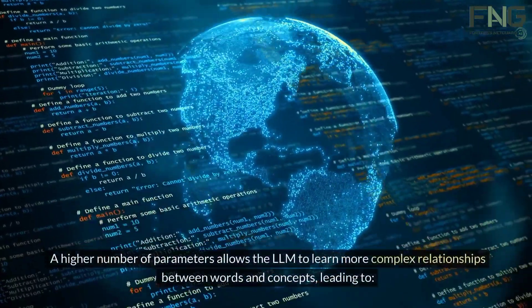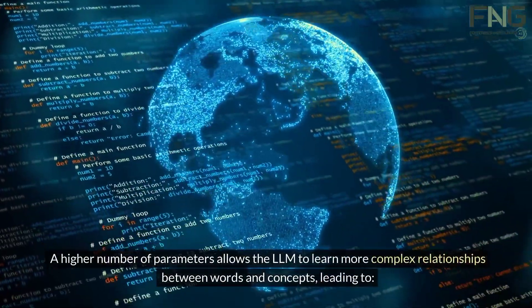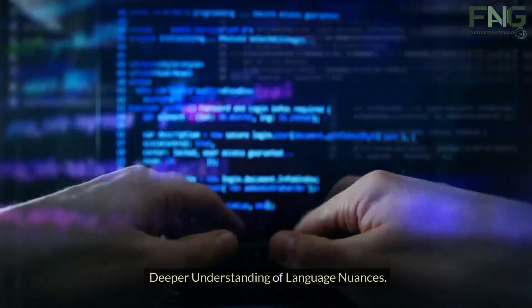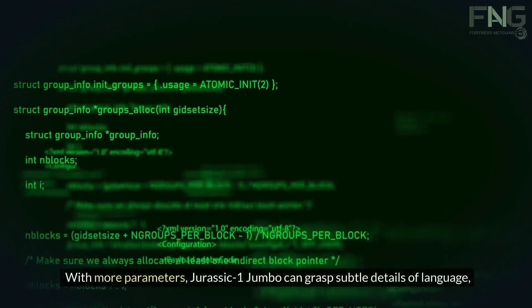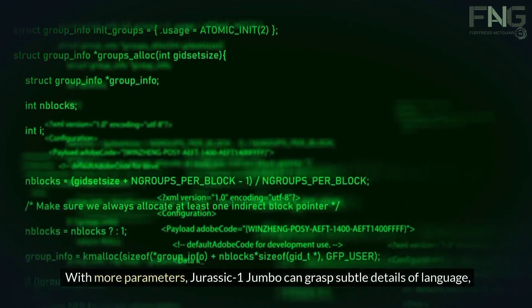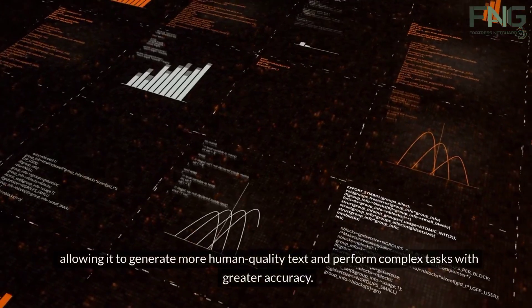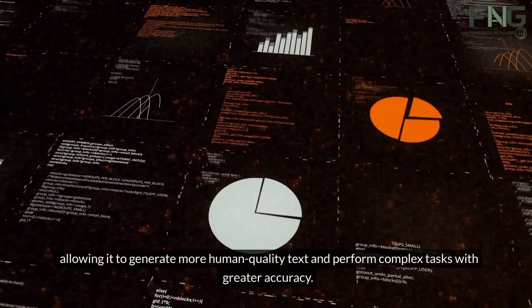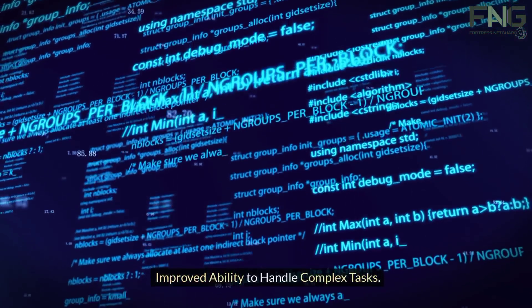A higher number of parameters allows the LLM to learn more complex relationships between words and concepts, leading to deeper understanding of language nuances. With more parameters, Jurassic-1 Jumbo can grasp subtle details of language, allowing it to generate more human-quality text and perform complex tasks with greater accuracy.